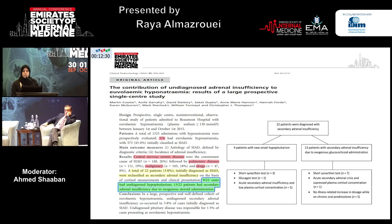An important question for internists is how much adrenal insufficiency contributes to SIADH. In one well-conducted prospective study, they found that among patients admitted with hyponatremia, almost 43.4% were related to SIADH. However, the most common causes of SIADH were central nervous system disease, pulmonary disease, malignancy, and drugs. Adrenal insufficiency per se was responsible for only around 3.8% of patients with SIADH, and most of these were attributed to secondary adrenal insufficiency — either from exogenous steroid use or from undiagnosed hypopituitarism.